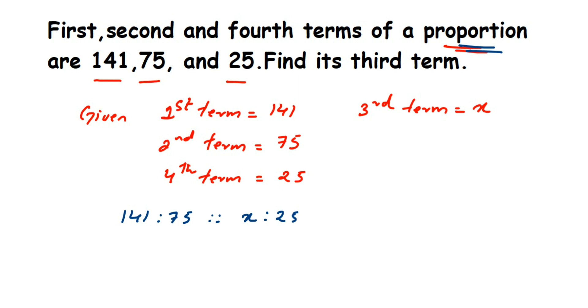Since they are in proportion, the product of extremes will be the same as the product of means. When you multiply the extremes (141 and 25) and when you multiply the means (75 and x), the product will be the same.